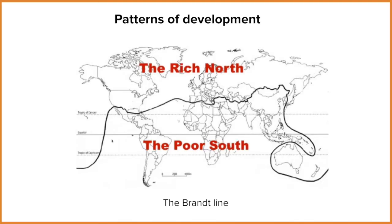This line is supposed to represent the level of development across our globe. The general pattern is that we've got more HICs in the Northern Hemisphere and more LICs in the Southern Hemisphere. It doesn't all fit the pattern, so the Brandt Line was modified to take into account Japan as well as Australia and New Zealand.